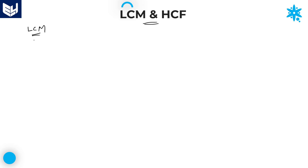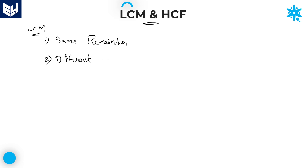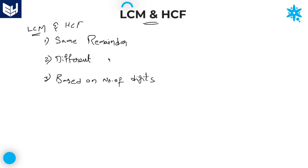In LCM as well as HCF, basically we have three models of problems. The first one is same remainder — problems related to same remainder. The second one is problems related to different remainders. And the third model is based on number of digits. These are the three models which are there in LCM as well as HCF. I will explain them one by one.